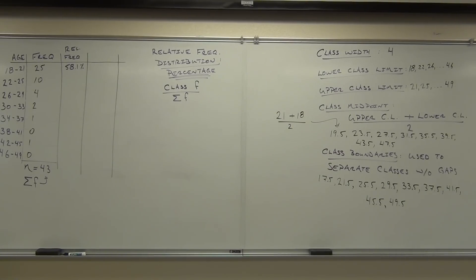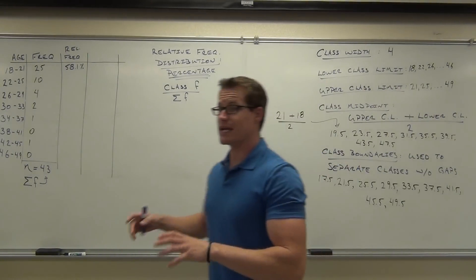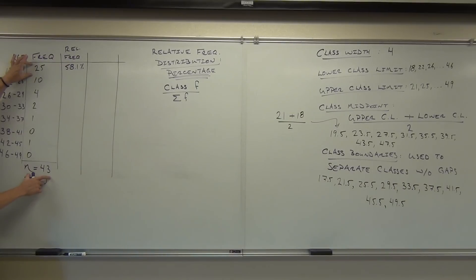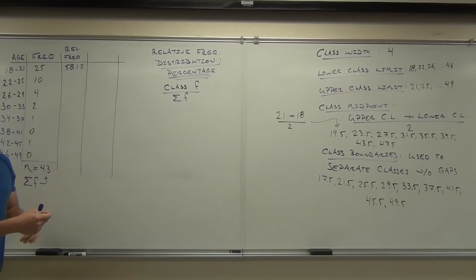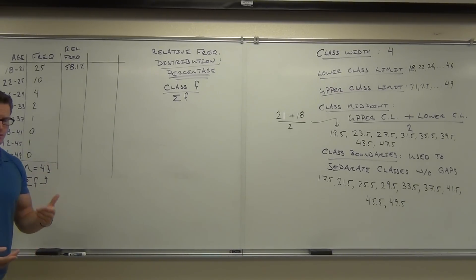Let's get it back up here. If you're struggling a little bit on finding this, what we're doing for each individual class is you're taking the frequency divided by your total count — that's your n, or your sum of frequencies, which is pointing to the 43. So for this one, we did 25 divided by 43, which gave us 0.581. We're just changing that to a percentage because most people are better with percentages.